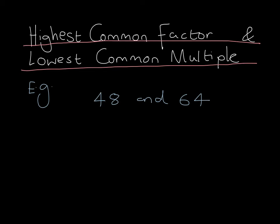Finding the highest common factor and lowest common multiple of a pair of numbers. For example, starting with 48 and 64.